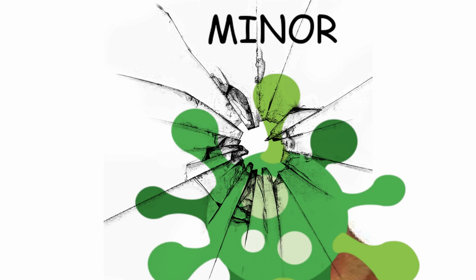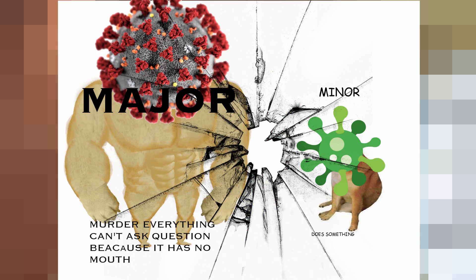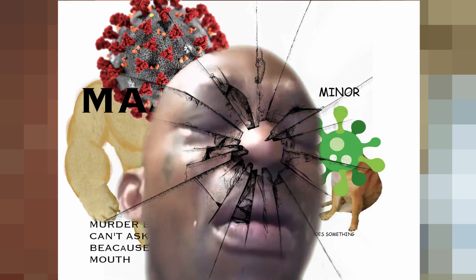Smallpox was an infectious disease caused by one of two virus variants: variola major and variola minor. The initial symptoms of the disease included fever and vomiting. This was followed by formation of ulcers in the mouth and a skin rash.